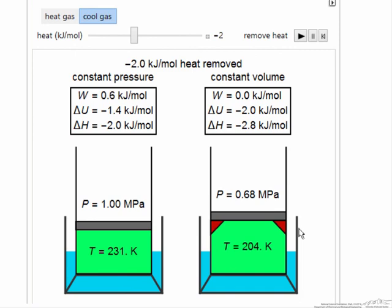So this goes to a lower pressure on the right, the constant volume system. And again, we can see that delta H equals Q for constant pressure, but delta U equals Q for constant volume.